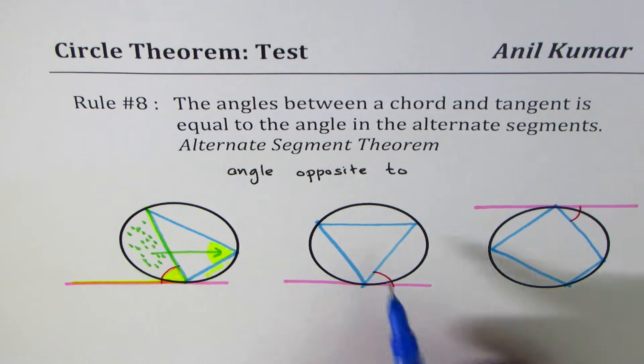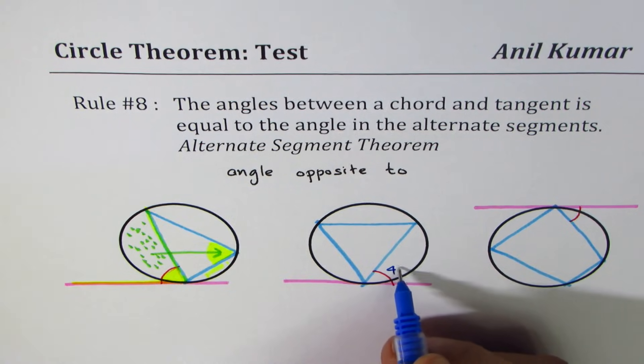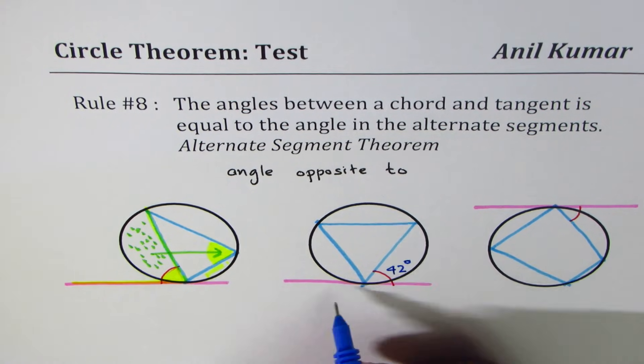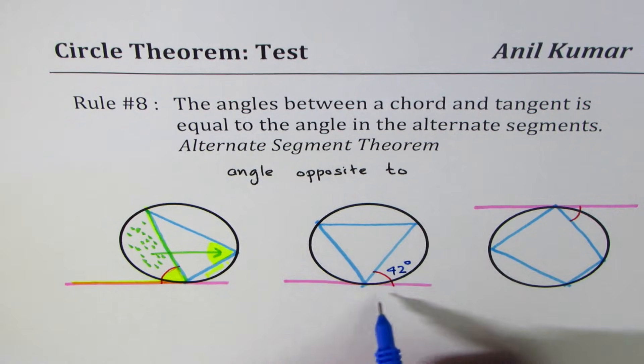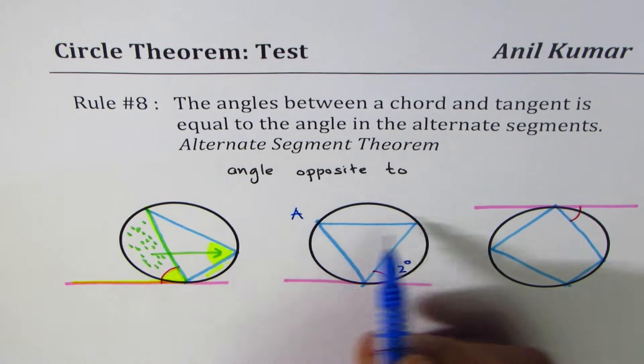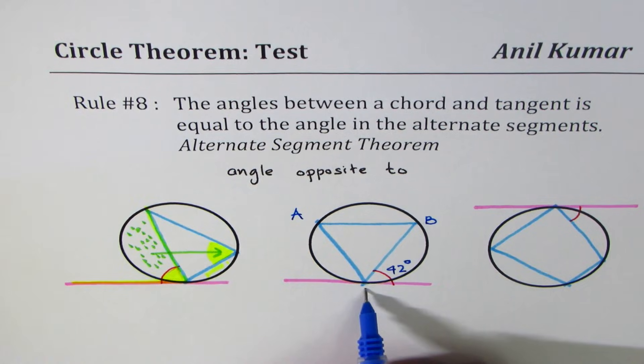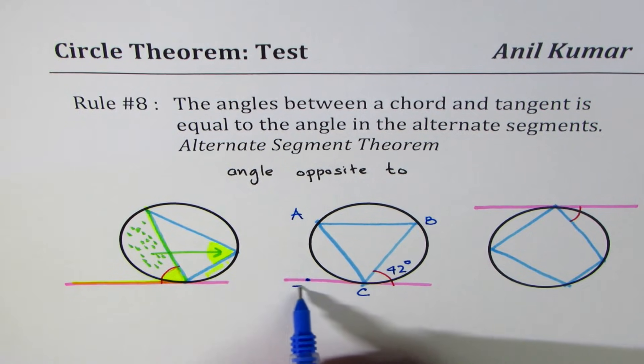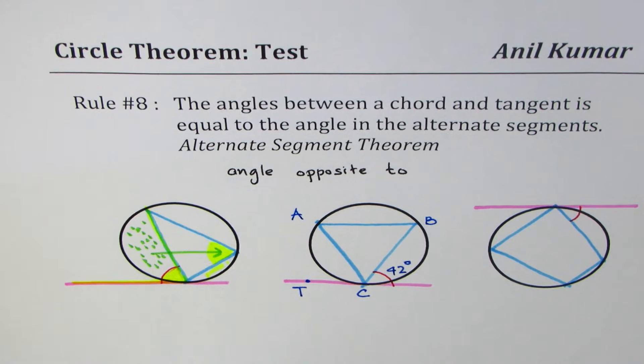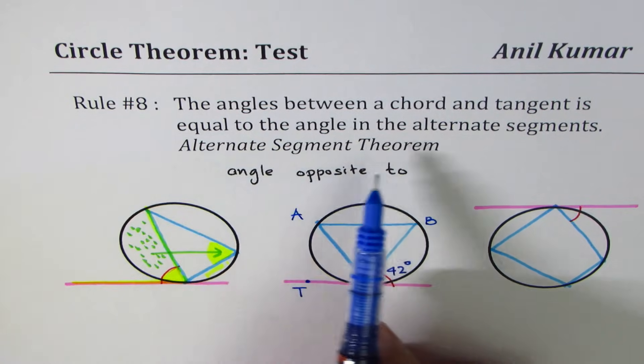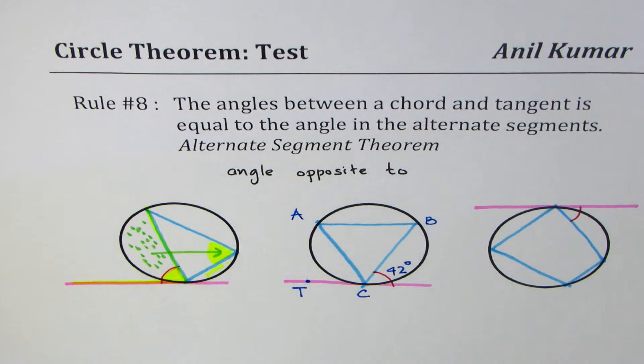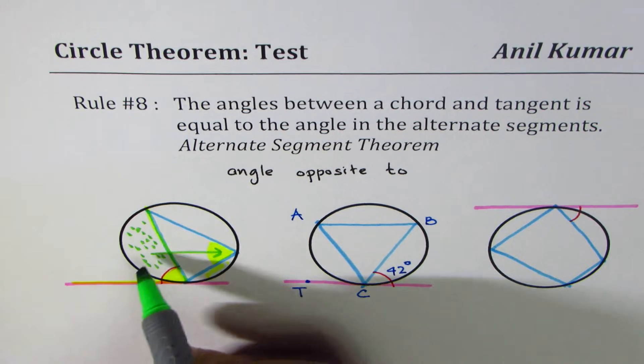Now here, which is the 42 degree angle? Let's say the triangle formed is ABC and this is point D. It could be a multiple choice question: which one is equal to 42 based on alternate segment theorem? We'll go with the strategy of opposite side.